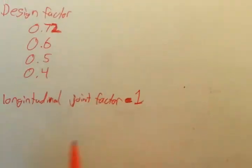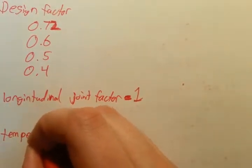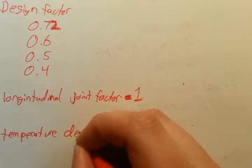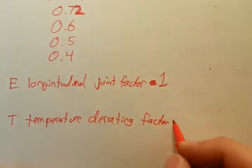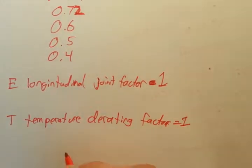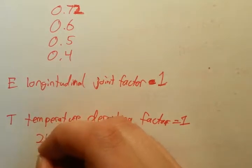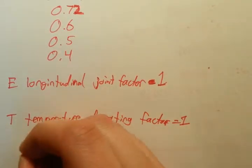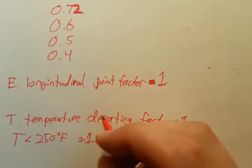The last one, T, is the temperature derating factor. This one most of the time is also going to be one. If you look in DOT 192, it gives you ranges, but as long as you're under 250 degrees Fahrenheit, it's always going to be one.